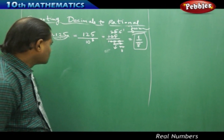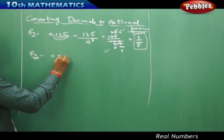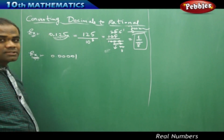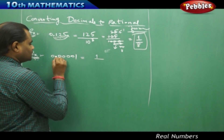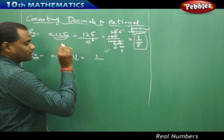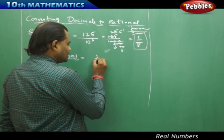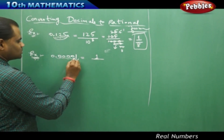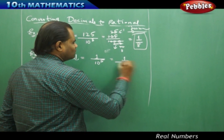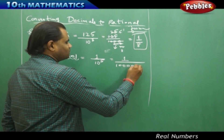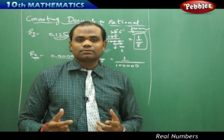Let's take another example supporting conversion from decimal to rational number. For 0.00001, I need to move the decimal 1, 2, 3, 4, 5 steps to the right — a five-step process to make P an integer. Because I move 5 steps to the right, I raise 10 to the power of 5, giving me 1 over 100000, which is 1 over 1 lakh.